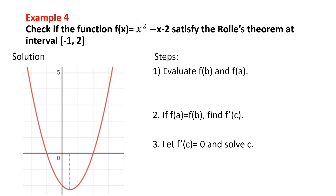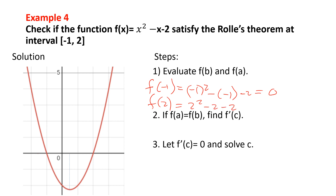For the function f(x) = x² - x - 2, check if it satisfies Rolle's Theorem on the interval [-1, 2]. Evaluate: f(-1) = (-1)² - (-1) - 2 = 0. f(2) = 2² - 2 - 2 = 0. So f(a) equals f(b). Now set f'(c) = 2c - 1 = 0, giving c = 1/2.